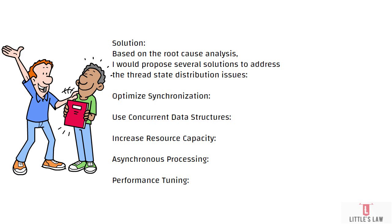The fourth solution is asynchronous processing. By introducing asynchronous processing techniques such as asynchronous I/O or message queues, you can offload blocking operations from the main application threads, which reduces contention and improves responsiveness. This is why asynchronous processing is very important for addressing thread state distribution issues.